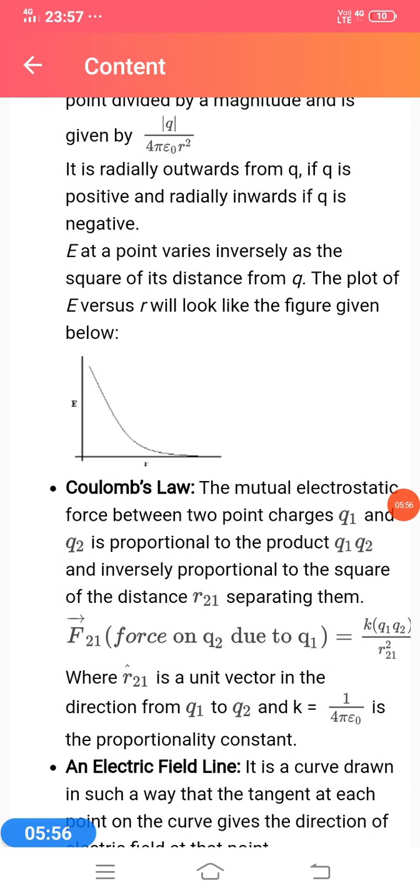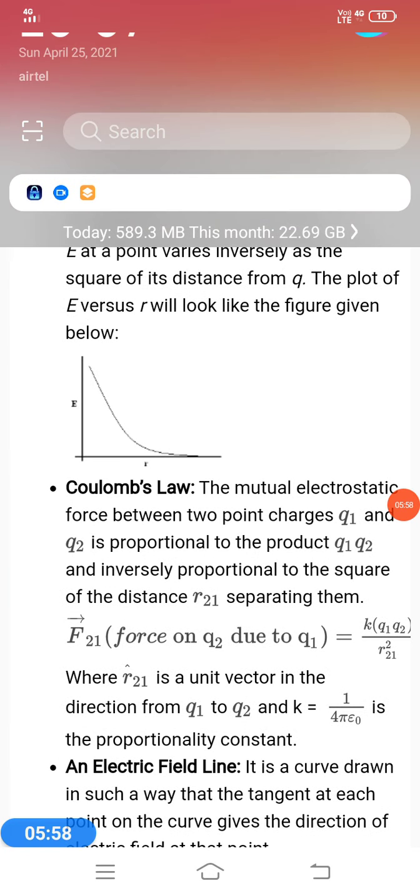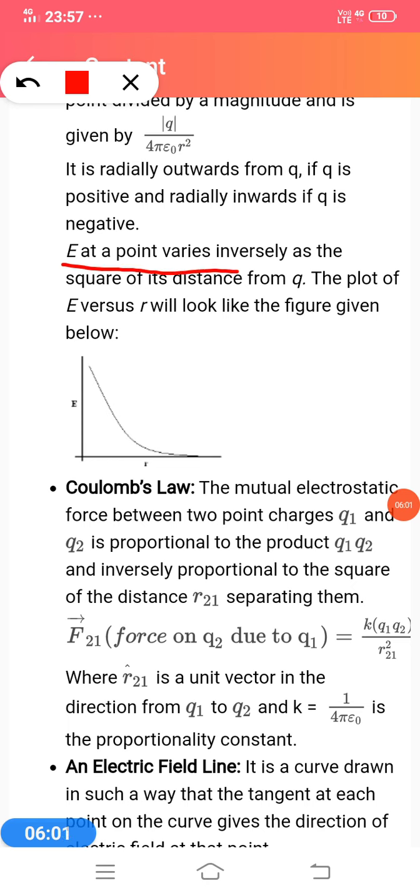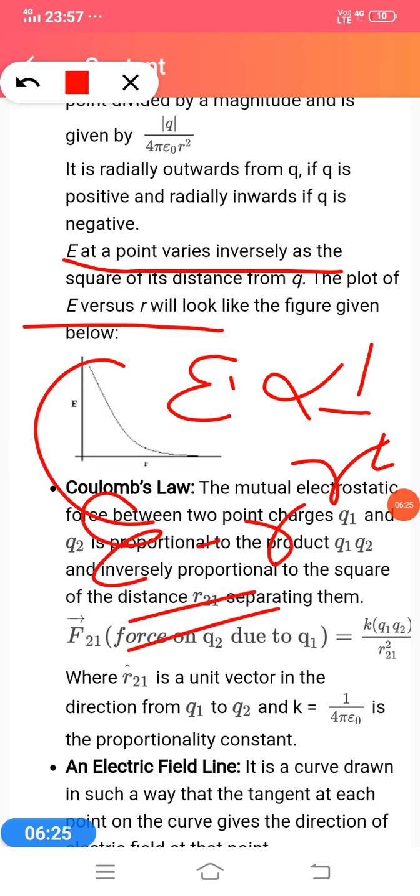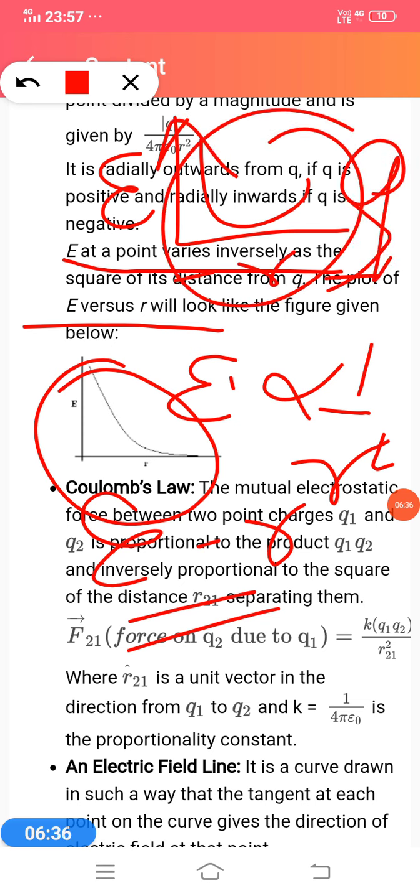At a point, the electric field varies inversely as the square of the distance from q. The plot of E versus r will look like the figure, where this is the electric field E and this is the distance from charge q.